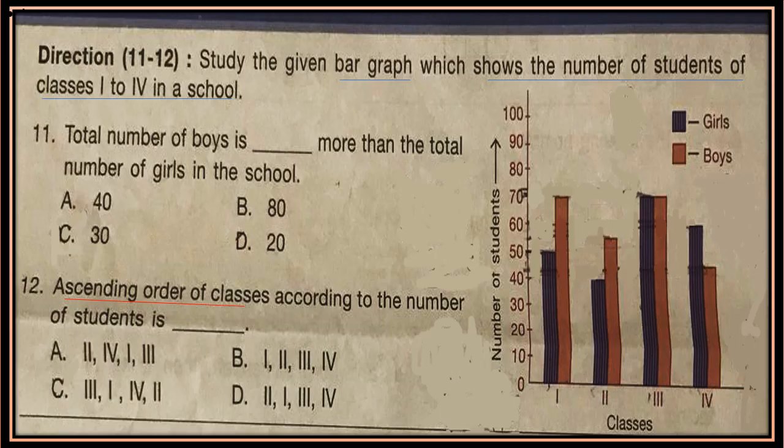Questions 11 to 12: Study the given bar graph, which shows the number of students of classes 1 to 4 in a school. Question 11: The total number of boys is how many more than the total number of girls in the school? Calculate the total number of boys, calculate the total number of girls, and then find how many more boys there are than girls.